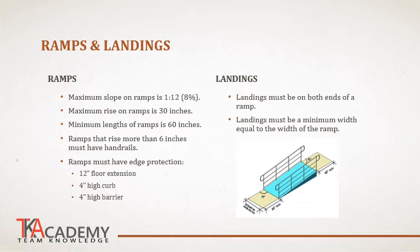There are three different ways to accomplish edge protection. One is to have a 12-inch floor extension, meaning the level surface of the ramp extends 12 inches beyond the guardrail or edge definition. A very commonly used method is a 4-inch high curb that demarcates the edge of the ramp. Another method is a 4-inch high barrier, such as a guardrail where the space between the rail and the ramp surface is 4 inches or less — you could not push a 4-inch sphere through that space.